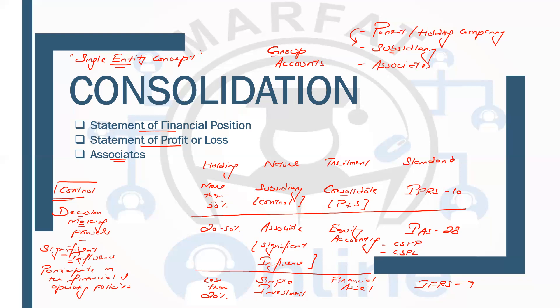So we have three things: the parent company, which is the holding company — the one that has acquired shares in other companies, which can be up to 100%. Then the subsidiary, which is where the parent has more than 50% of the shares — we have control, so we consolidate. The associate is where there is 20 to 50% holding. Consolidation is done on the basis of the single entity concept — meaning these entities are one single entity in substance — that is why we consolidate their financial statements.